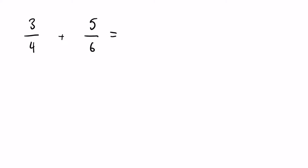Let's take an example: three quarters plus five sixths. Ultimately we need to be finding a common denominator, so the denominator is the bottom part of the fraction.